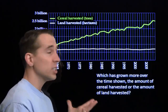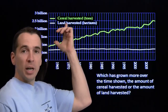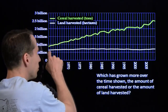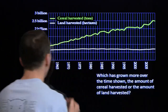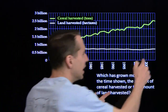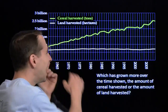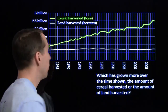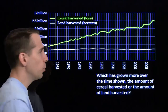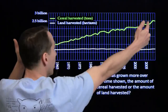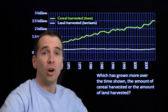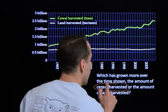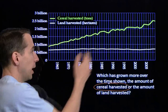First question: which has grown more over this time frame — the amount of cereal harvested or the amount of land harvested? If we look at the land harvested, this line stays pretty flat. At the end it's a little bit more than 0.5 billion — it hasn't grown a whole lot. Now, the cereal harvesting line starts at a little less than 1 billion and at the end it's all the way up to 2.5 billion. So the amount of cereal harvested has grown much more than the amount of land harvested.